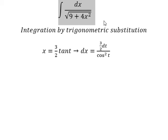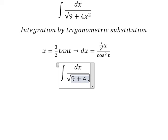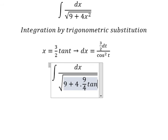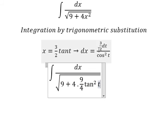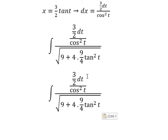Now we need to change this integral. x squared we change to 9 over 4 times tan squared t. dx we change for this one. Now we need to simplify: 4 multiply with 9 over 4 you got about 9.